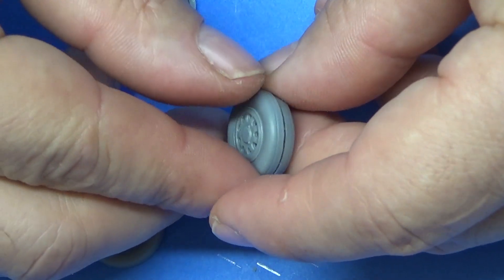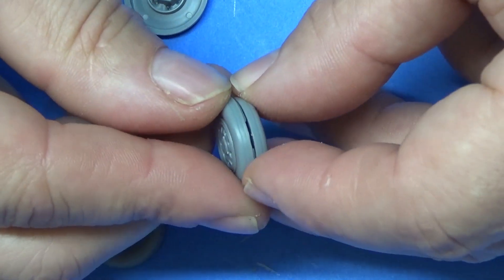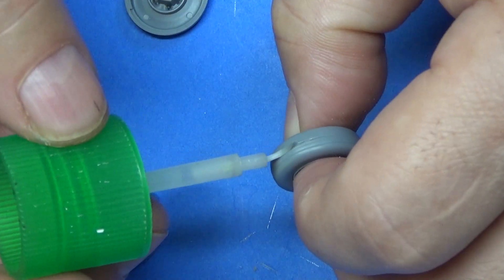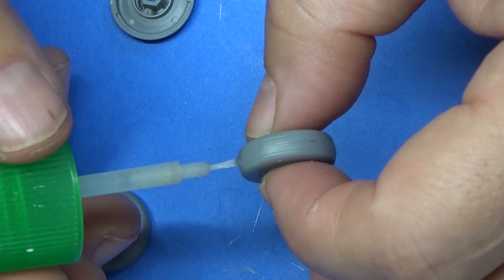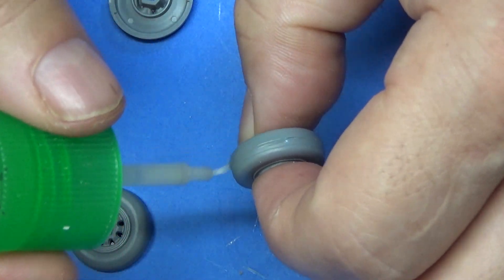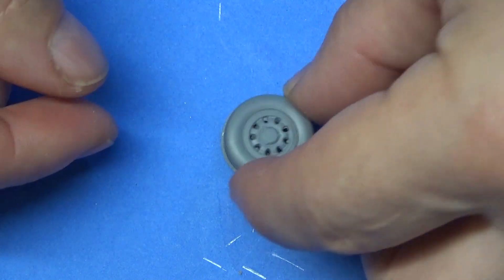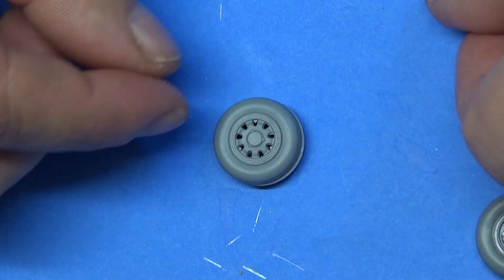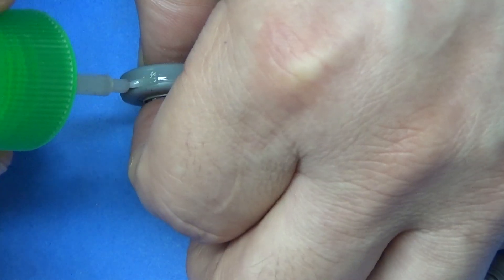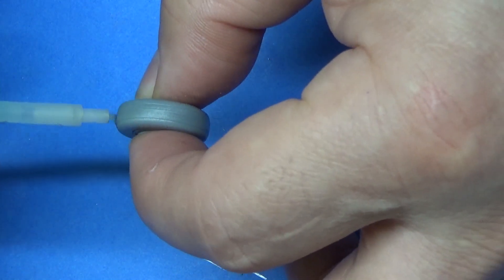Got our wheels. Two rear and one front. You see how that goes just like that. It'll look nice. Put those together. Two halves. Just like that. Goes together very easily.